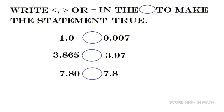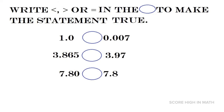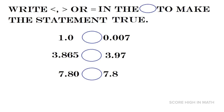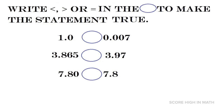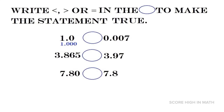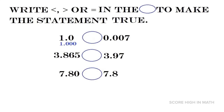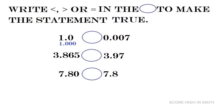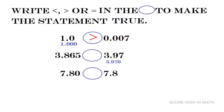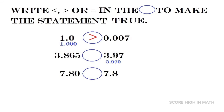Write less than, greater than, or equal to in the circle to make the statement true. For number one, we compare 1.0 with 0.007. The numbers go up to the thousandths place, so we add two zeros to the first number, making it 1.000. We can instantly identify that 1.000 is greater than 0.007.